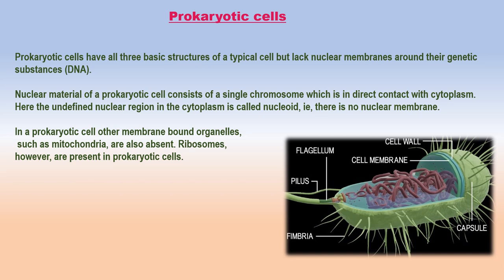Prokaryotic cells. Prokaryotes are organisms that have primitive and incomplete cells containing prokaryotic cells in their body structure. Prokaryotic cells have all three basic structures of a typical cell but lack nuclear membranes around their genetic substances. The nuclear material consists of a single chromosome in direct contact with cytoplasm; the undefined nuclear region is called the nucleoid — there is no nuclear membrane. Other membrane-bound organelles such as mitochondria are also absent, though ribosomes are present. Prokaryotes include archaebacteria, bacteria, and cyanobacteria (formerly called blue-green algae).